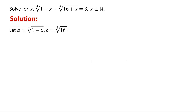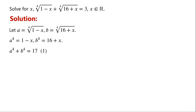Let a equal the fourth root of 1 minus x, and b equal the fourth root of 16 plus x. Then a to the power of 4 is equal to 1 minus x, and b to the power of 4 is equal to 16 plus x. So a⁴ plus b⁴ equals 1 minus x plus 16 plus x, which is 17. We label this as equation 1.